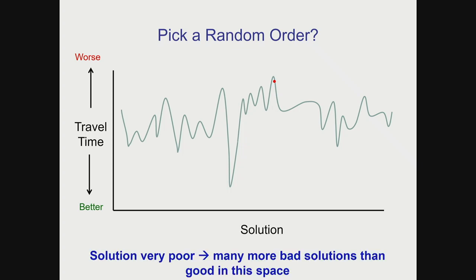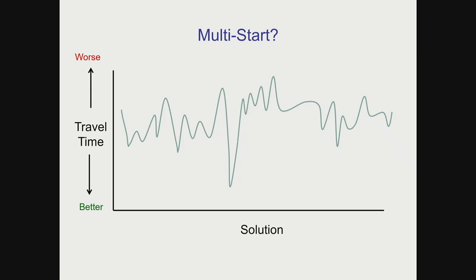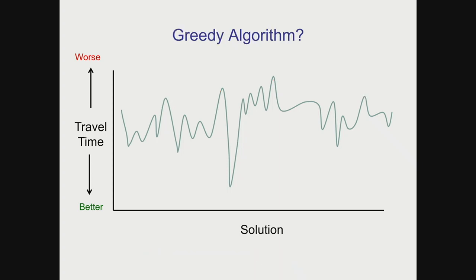We could do a bit better with multi-start: pick several random solutions using C++ random number generators, get a bunch of answers, and pick the best one. It's still not going to be very good because there are so many bad solutions compared to pretty good ones, but it's better than just picking the first random order. With a greedy algorithm, we're pretty good at getting to local minima — we start making decisions one at a time and generally get a much, much better solution than random.